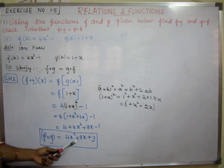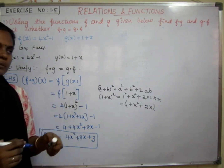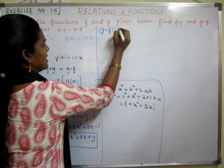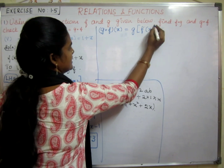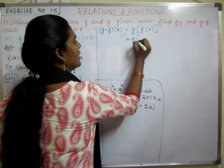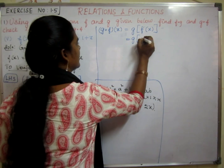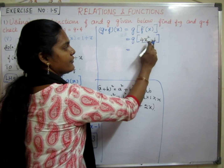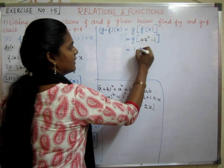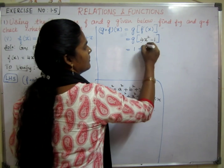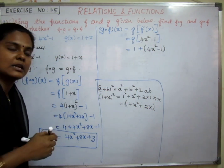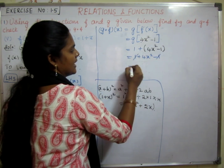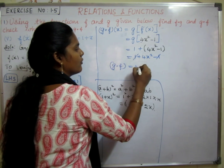Now find the RHS. g∘f of x equals g of f of x. Substituting f of x, which is 4x squared minus 1, into g: we get 1 plus (4x squared minus 1). The 1 and minus 1 cancel, giving g∘f of x equals 4x squared.